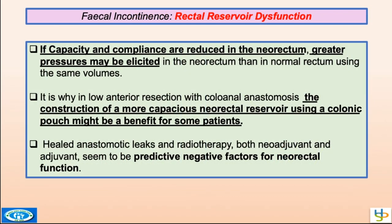Fecal incontinence due to rectal reservoir dysfunction: capacity is important, but also compliance. Capacity and compliance are reduced in the neorectum, with greater pressure elicited using the same volumes compared to normal rectum. This is why in low rectal resection with coloanal anastomosis, construction of a more capacious neorectal reservoir using a colonic pouch might benefit some patients. High anastomosis and radiotherapy — both neoadjuvant and adjuvant — seem to be predictive negative factors for rectal function, reducing capacity and compliance of the neo-reservoir.